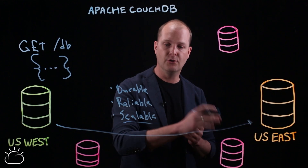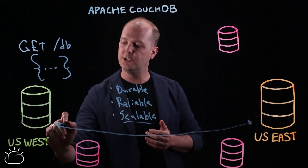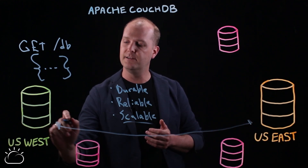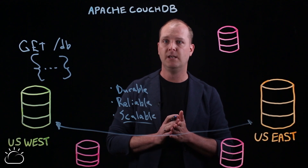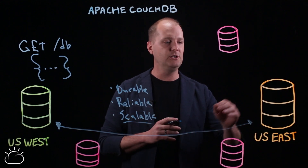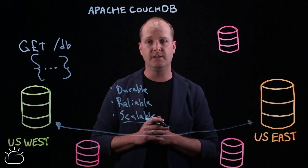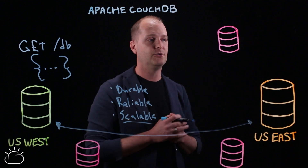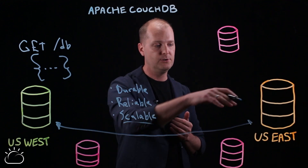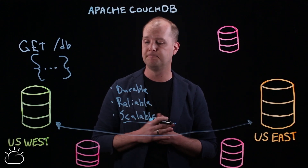But it doesn't stop there. You can also choose to set up that replication in an active-active bidirectional fashion. Now not only do you have another site for fault tolerance and high availability, but you also have the ability to direct your users on the East Coast to the US East region for lower latency.